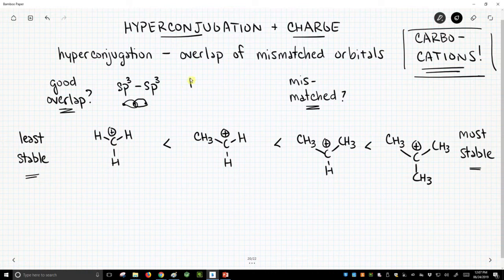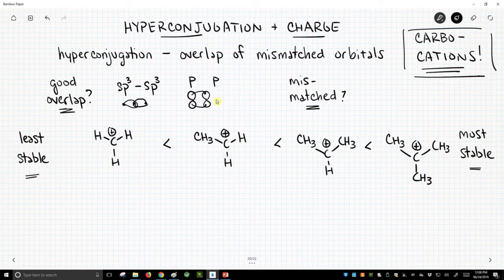What other orbitals interact well? P orbitals interact well with each other. So on one atom you have a p orbital, on another atom you have a p orbital, and you tend to get good interaction between those two p orbitals. I could have drawn them closer, but that's how they interact.